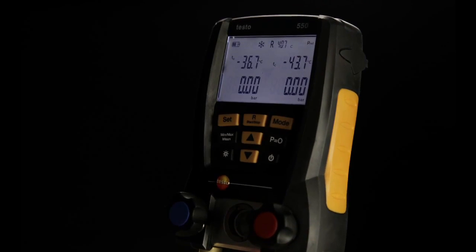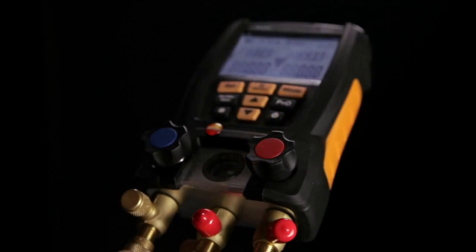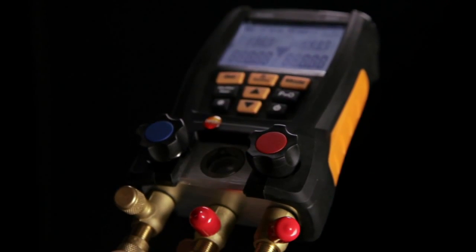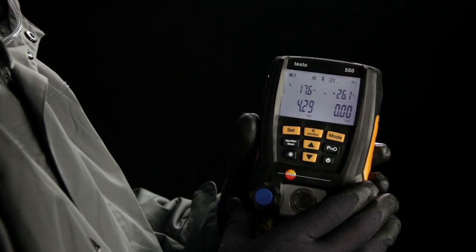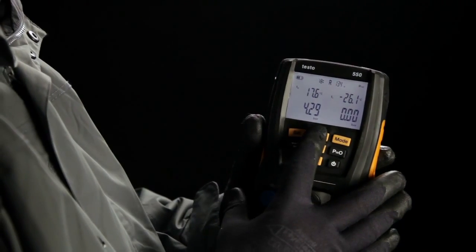You now need only one instrument to carry out your work. In addition to pressure, temperature, superheating and sub-cooling, the testo 550 can be used for evacuation and temperature compensated tightness testing. The selection of 39 preset refrigerants increases convenience even more.